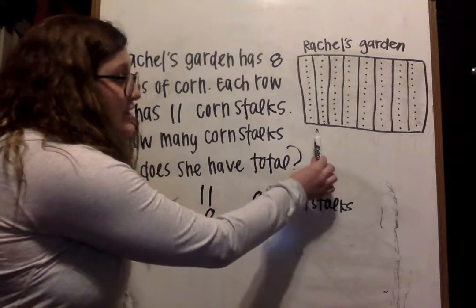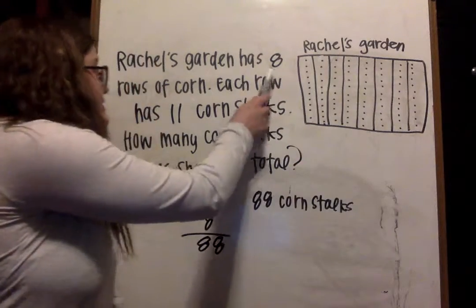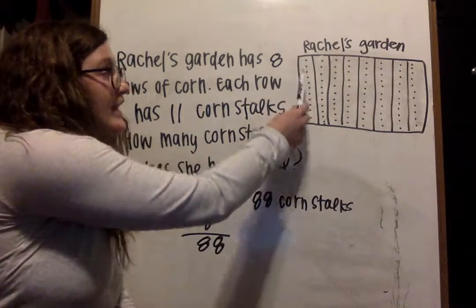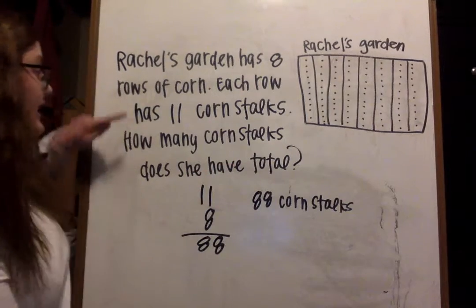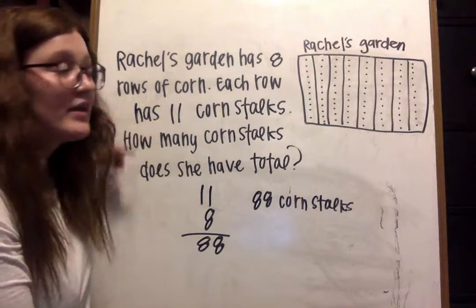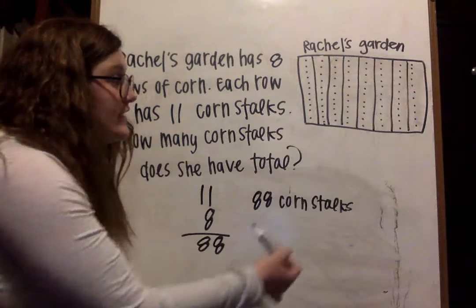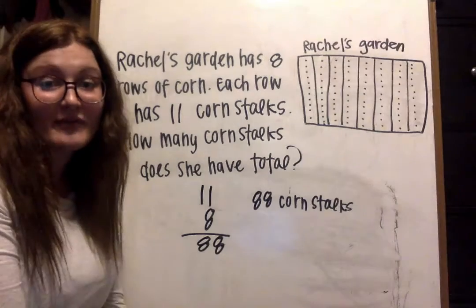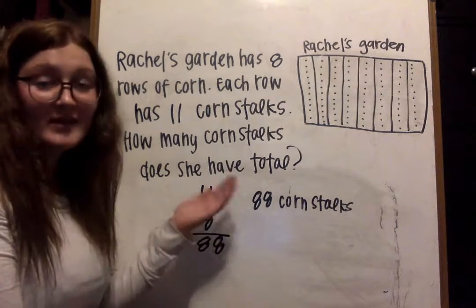Over here I drew a picture, and I drew eight rows representing eight rows of corn in Rachel's garden. Then I drew dots — 11 dots representing the 11 corn stalks per row. One option would be to count out each dot, but when you get up to bigger numbers, it's going to take a long time to count. But if drawing a picture works for you, then that works great.